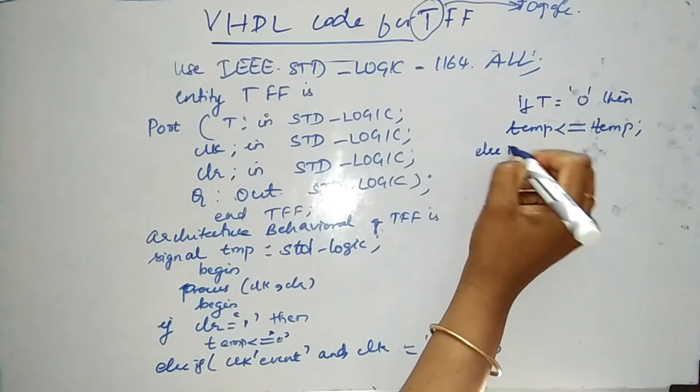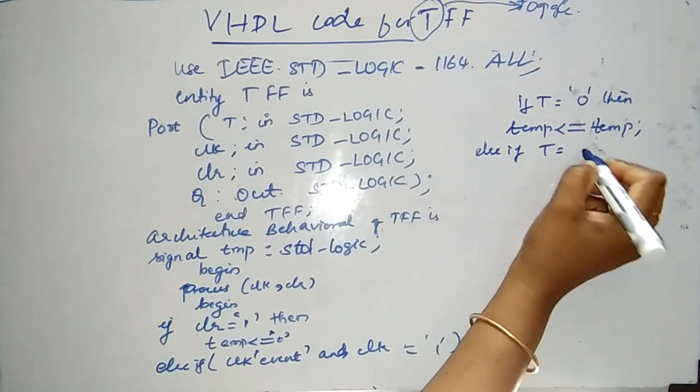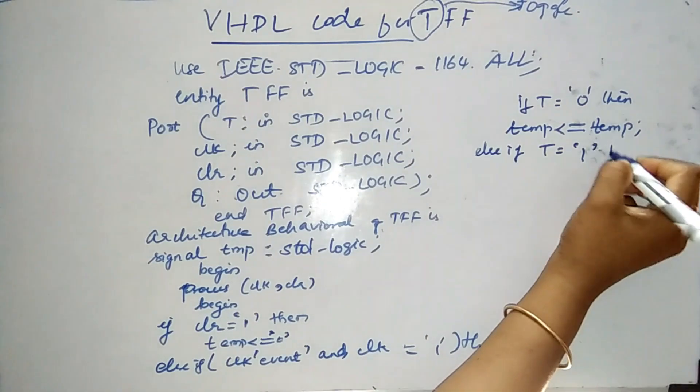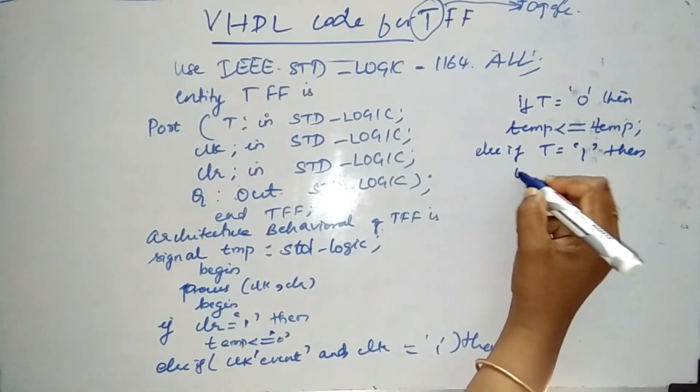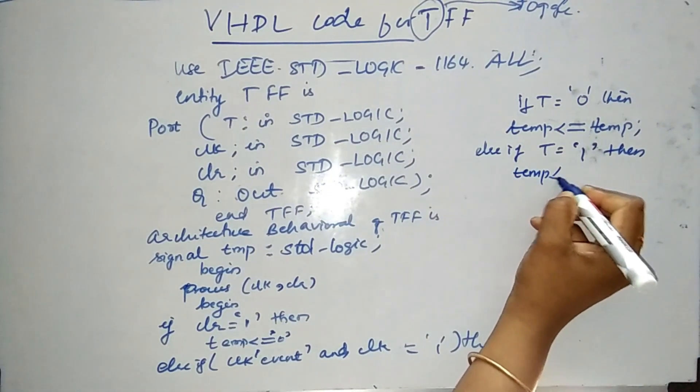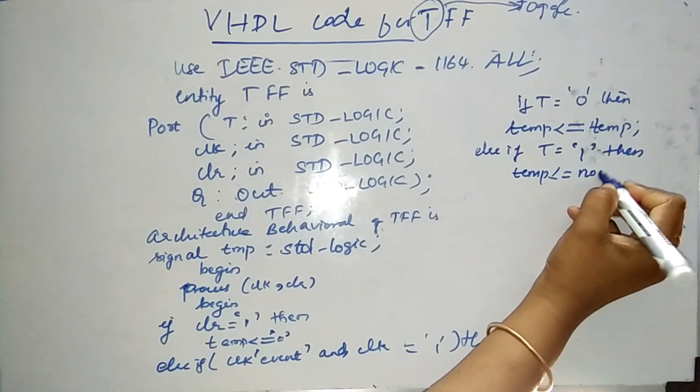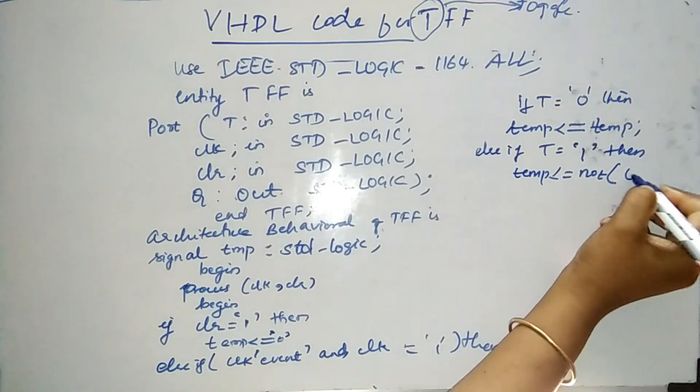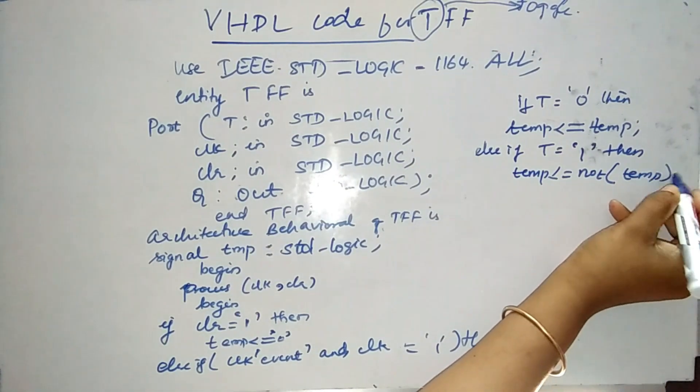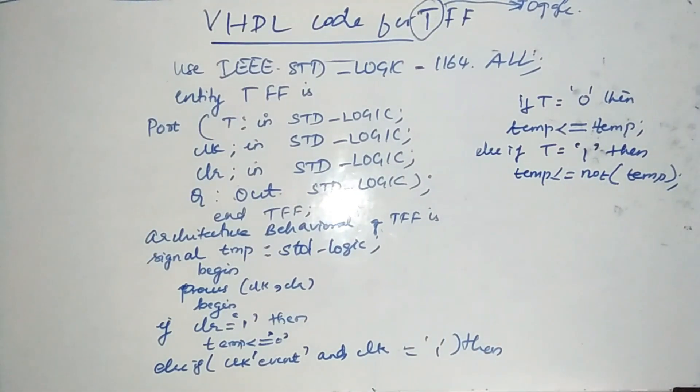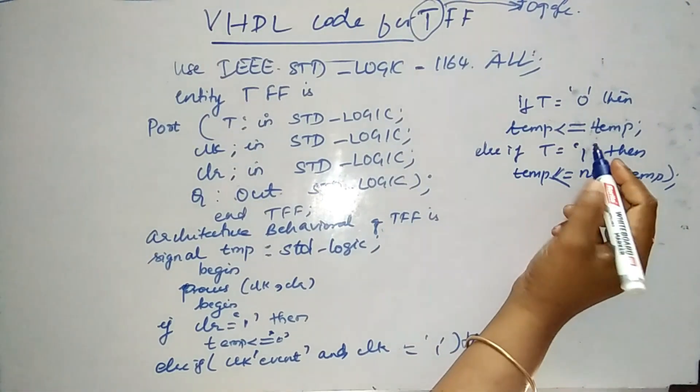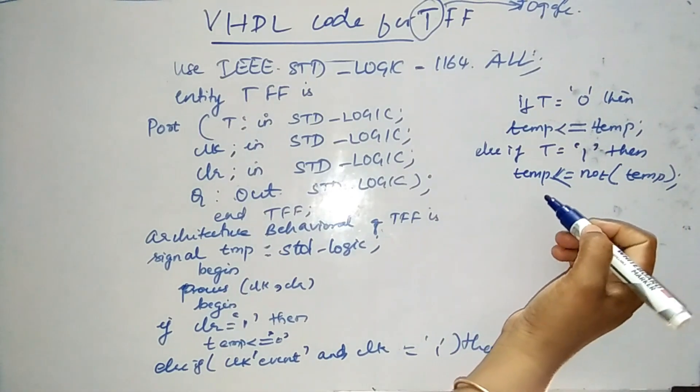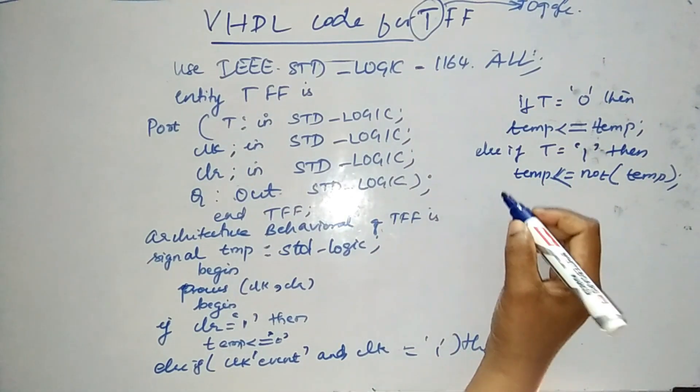Else if, what happens? When T, the second condition, when T is equal to 1, then what happens? Our temp signal tends to be not of temp. That is the complement of the input, whatever we have given. That is if it is 1, then we get a 0.